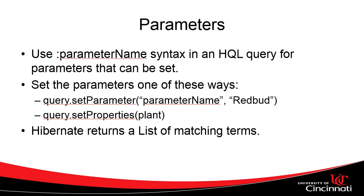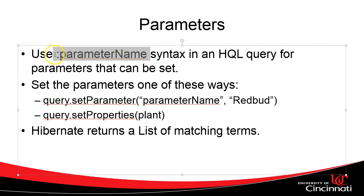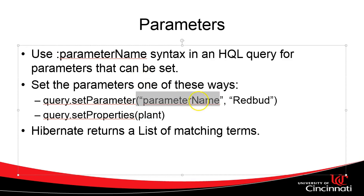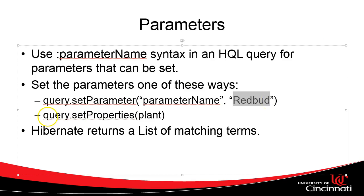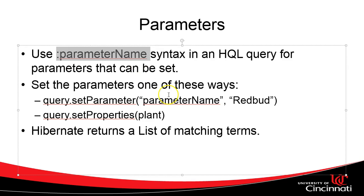We'll oftentimes want to set some parameters. Like we might say, give me all of the redbuds. If that's the case, we're going to use a syntax where we have a colon and then a parameter name. That says in our HQL we're going to save this space for a parameter we can add later. For example: from plants where plant name equals colon plant name. We can explicitly set the value of that parameter by using the parameter name as a string and then passing in the value we want.